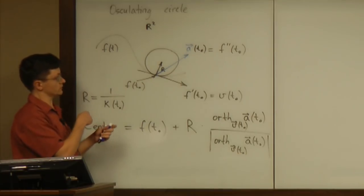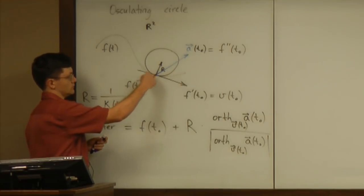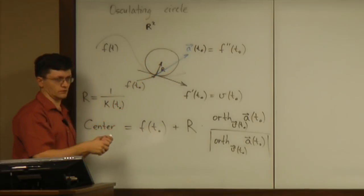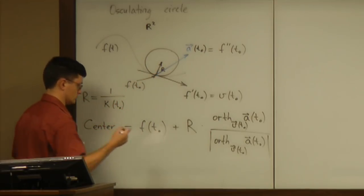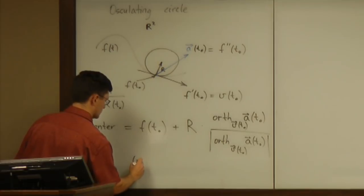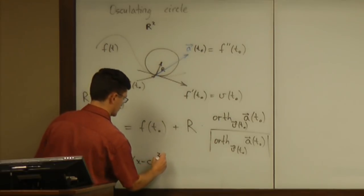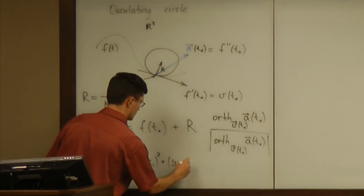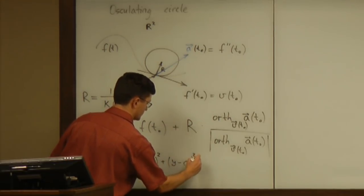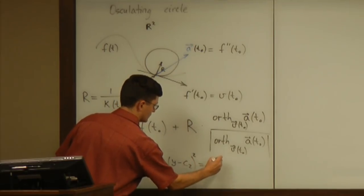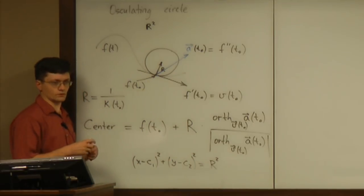And, of course, if you want the answer to be in the form of equation of a circle, well, then you know how to write down the equation. It's x minus c1, the first coordinate of the center squared plus y minus the second coordinate of the center squared equals the radius squared. That would be the equation of a circle.